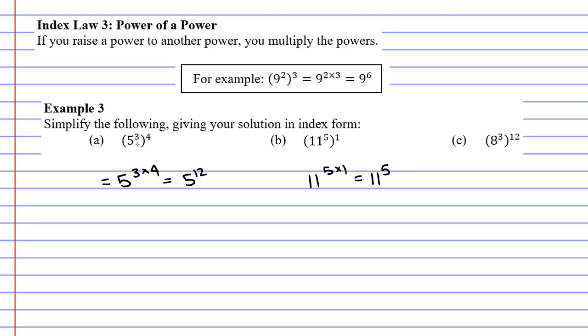And finally, question C. Our powers are 3 and 12, so we go 3 times 12, which gives us 8 to the power of 36.